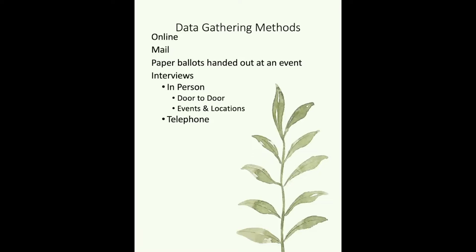There are different ways to gather data. If you've taken the Happiness Index online, then you've already experienced one of them. You can gather data online on your own website, or you can also use social media. There are myriads of ways that you can gather data online. Another way that you can gather data with the Happiness Index is by mail. You can print the ballot — the questionnaire — put it in an envelope with another envelope that has the stamps on it, and then mail it out.